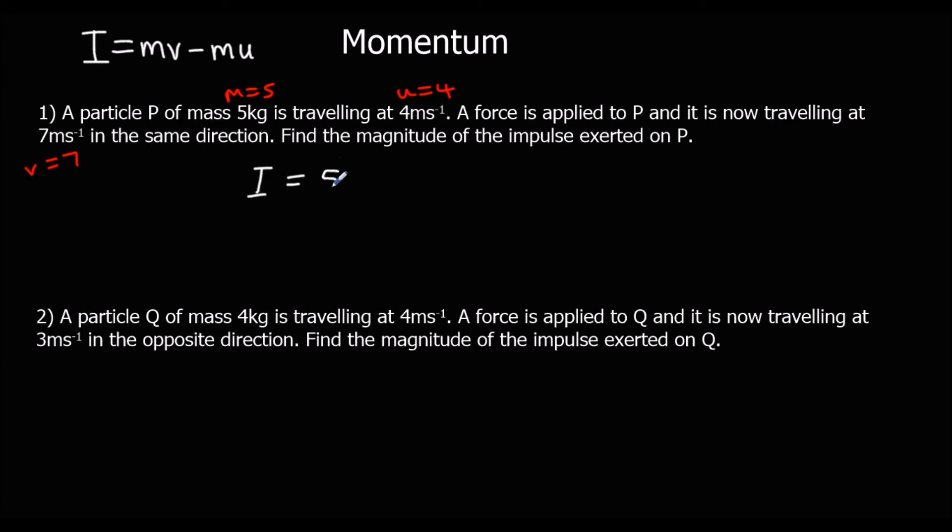Find the magnitude of the impulse exerted on P. So impulse is MV minus MU. So that's 35 minus 20, which is 15 newton seconds.